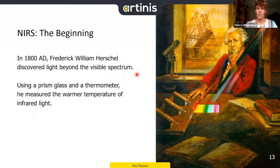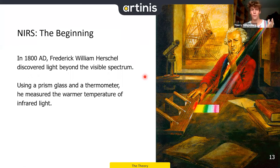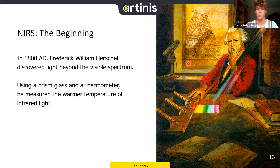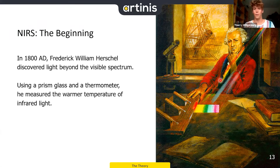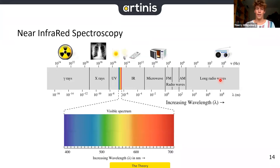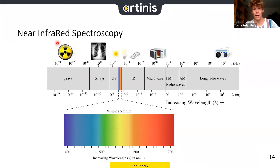As already mentioned, the company Artinis started in 2002, but it was approximately 200 years before that when Frederick William Herschel discovered light beyond the visible spectrum. Using a prism glass and a thermometer, he found that there was a warmer temperature beyond the visible — and what he discovered was infrared light.